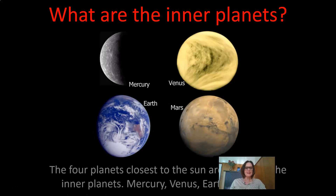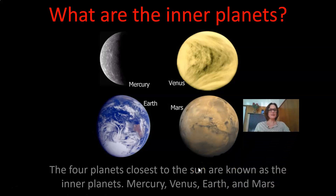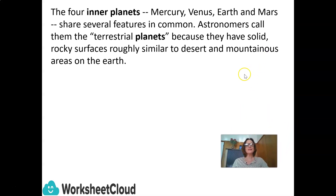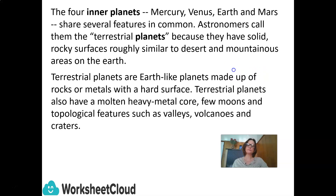The four planets close to the Sun are known as the inner planets: Mercury, Venus, Earth, and Mars. Astronomers call them the terrestrial planets because they have solid rocky surfaces, roughly similar to desert and mountainous areas on Earth. Terrestrial planets are Earth-like planets made up of rocks or metals with a very hard surface. They also have a molten heavy metal core, few moons, and topological features such as valleys, volcanoes, and craters.